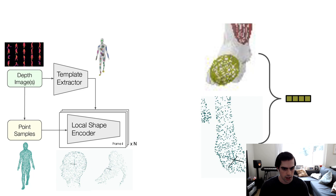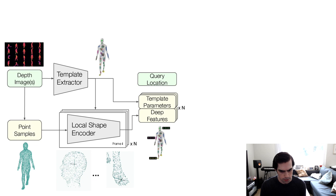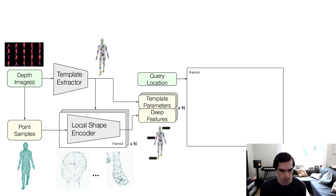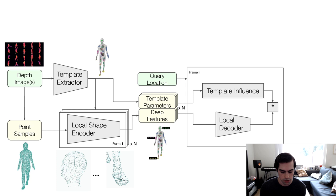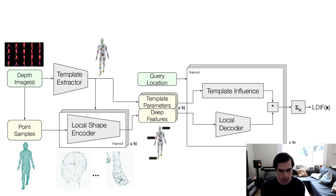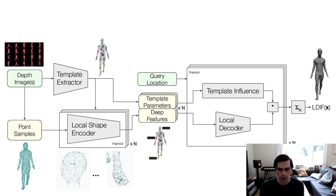Concatenating the template parameters and the deep features gives you the entire representation. To evaluate it at a query location in space — to get inside-outside at that location — you transform the query to the frame of one of the elements, compute the analytic influence of the RBF function there, and pass it through a local decoder, which is a small network that goes from XYZ to a scalar. These are RBF-weighted and summed over all shape elements to give the overall inside-outside function value. Running marching cubes on a local grid then gives you a mesh.